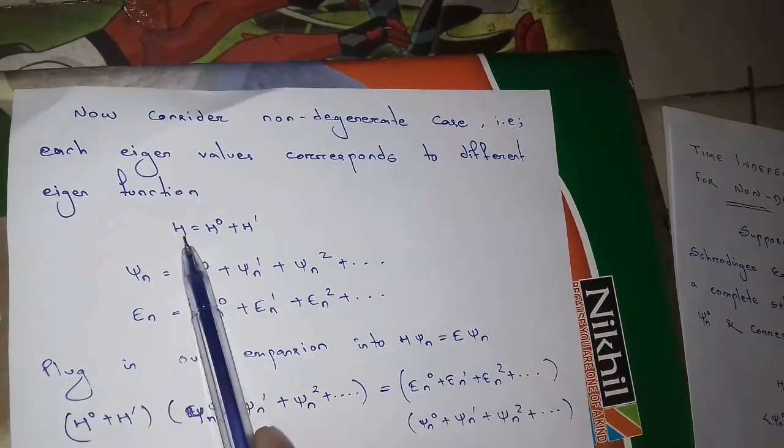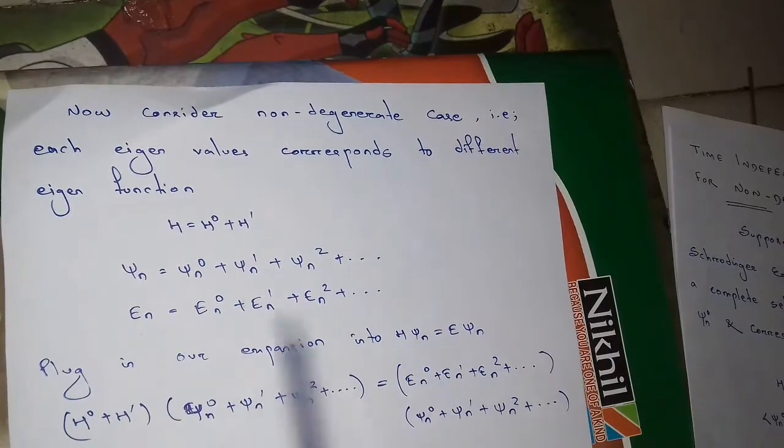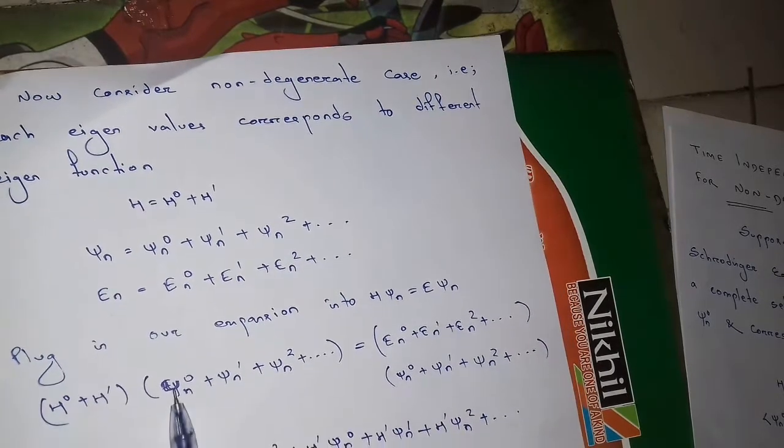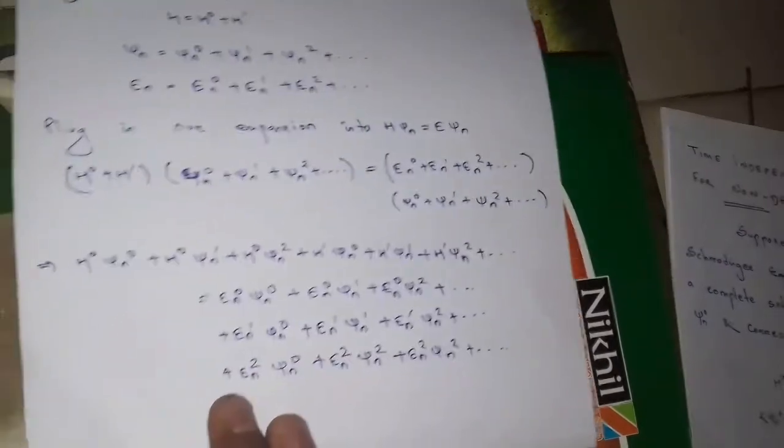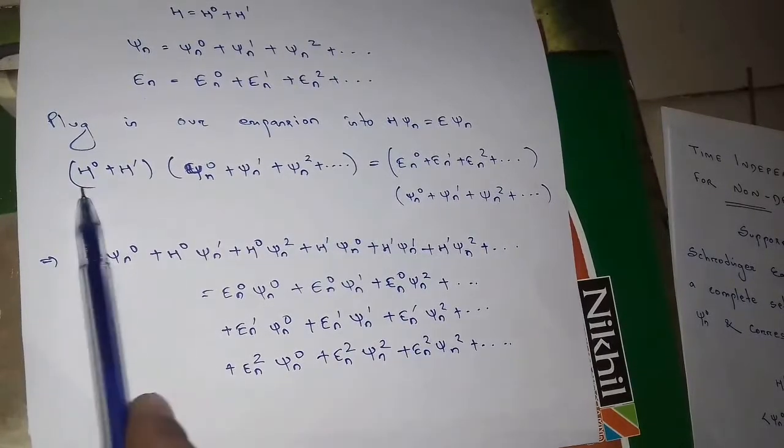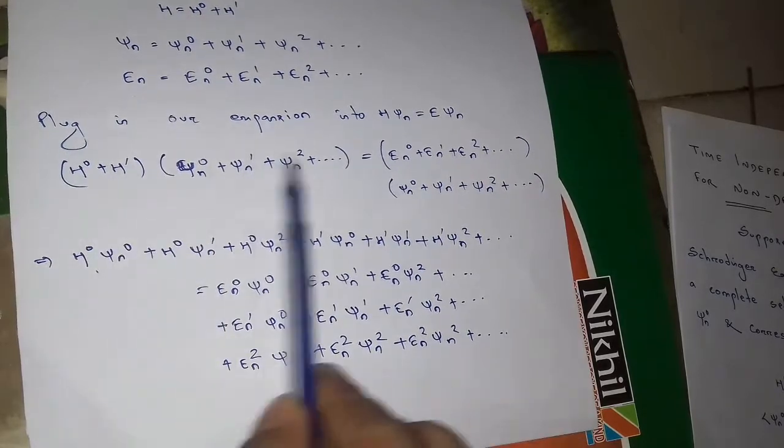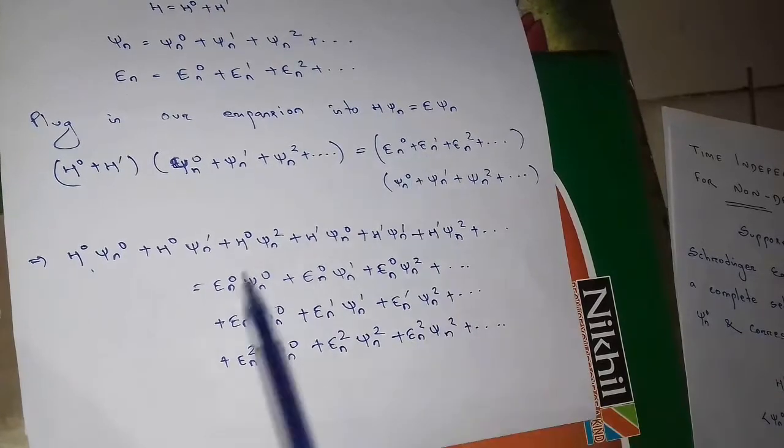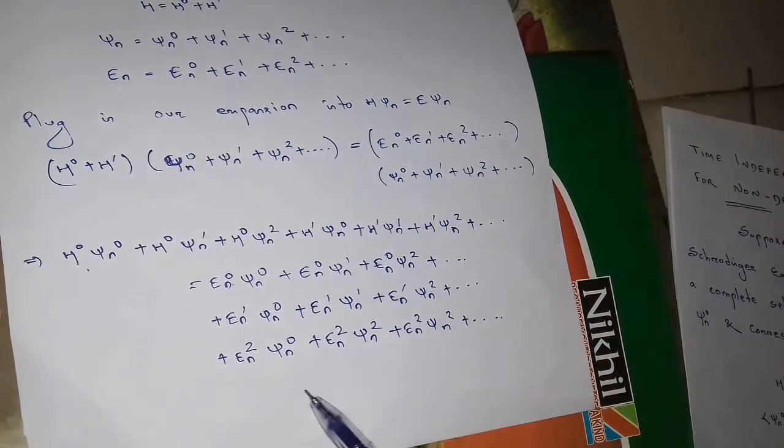Plug these equations in H psi n and E psi n. We have H value H0 and H dash, psi values psi n0, psi n1, psi n2 and we plug in and multiply. H0 psi n0, same thing we are doing for each term. And here also en0 psi n0, en0 psi n1, en0 psi n2 and corresponding we are getting this.